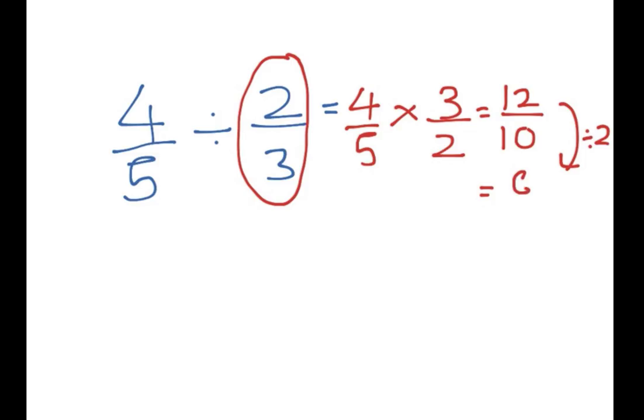So 12 divided by 2 is 6. 10 divided by 2 is 5. So we end up with 6 over 5.